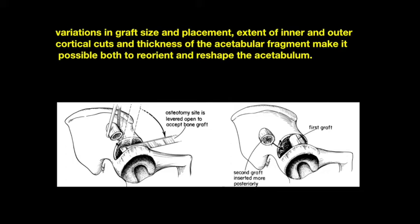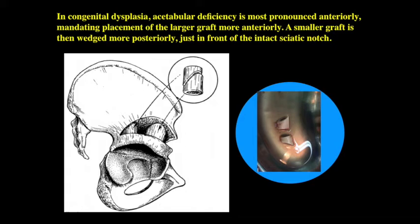For example, in congenital dysplasia, the acetabular deficiency is most pronounced anteriorly, mandating placement of the larger graft more anteriorly. A smaller graft is then wedged more posteriorly, just in front of the intact sciatic notch.